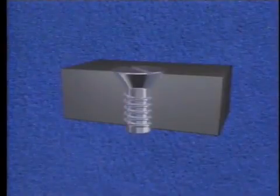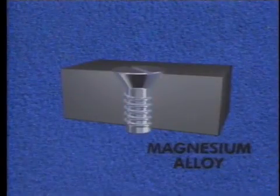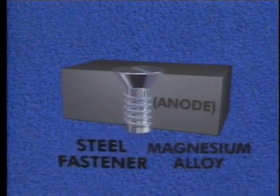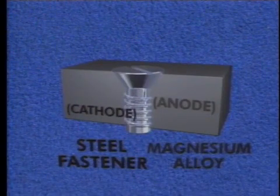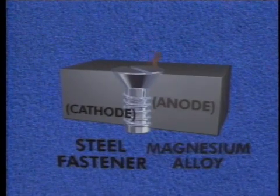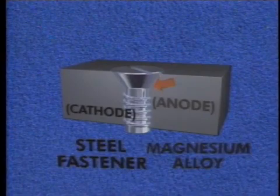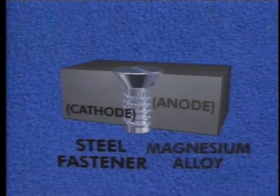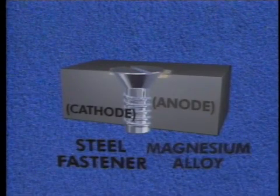Corrosion is deterioration of a metal because of its chemical reaction with the surrounding environment. There must be a metal present that has a tendency to corrode — this is referred to as the anode. Secondly, a dissimilar conductive metal known as the cathode must be present. The cathode is less corrosive than the anode. These metals must make contact in order for the electrons to move from the anode to the cathode. A conductive liquid path, known as the electrolyte, is needed to carry the electrical current between the metals.